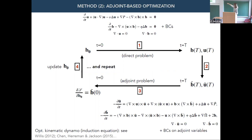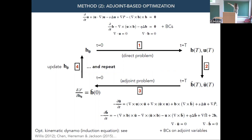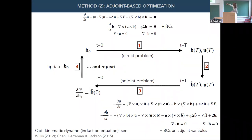This is a relatively cheap way of estimating the gradient. If B₀ were already optimal, the gradient would be zero and we'd be done — but that never happens. So we use the gradient information to update B₀ using a descent algorithm and iterate until the residual becomes small. This adjoint-based optimal control principle applied to the dynamo problem has been done in the kinematic case for the induction equation by various authors, and extended to nonlinear regimes by Witzner, Andrew Jackson and collaborators.